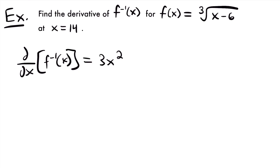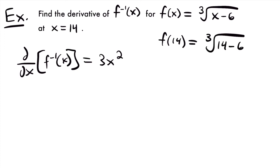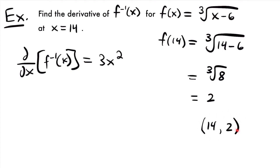We already know that the derivative of the inverse is 3x squared. When a problem says to find the derivative at x equals 14, note that this x value corresponds to the original function. The first thing you should do is plug that value of x into the original function to find the corresponding y value. Plugging in 14: f(14) equals the cube root of 14 minus 6, which is the cube root of 8, which equals 2 because 2 times 2 times 2 is 8. So the full coordinate point on the original function is (14, 2).